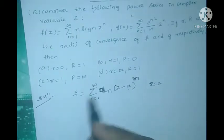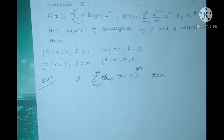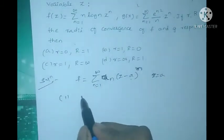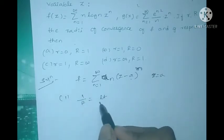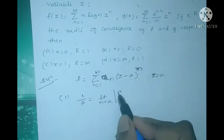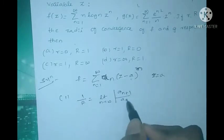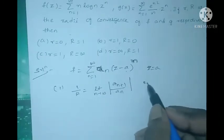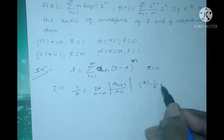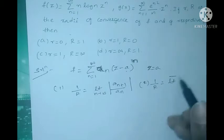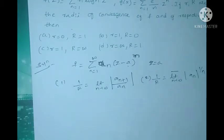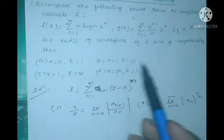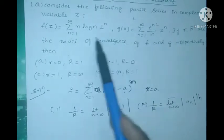There are two formulas to find the radius of convergence. The first formula is: 1/r = limit as n→∞ of |a_(n+1) / a_n|. The second formula is: 1/r = limit superior as n→∞ of |a_n|^(1/n). These are the two formulas used to find the radius of convergence.